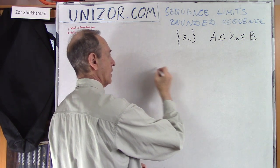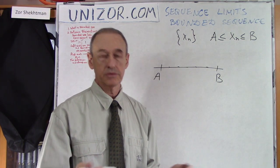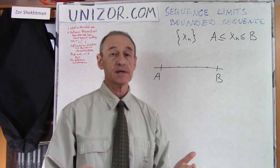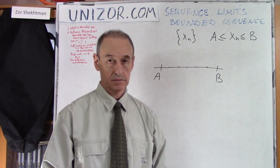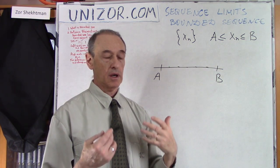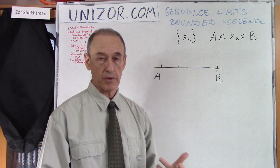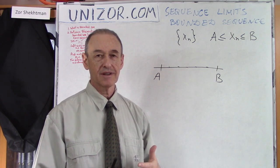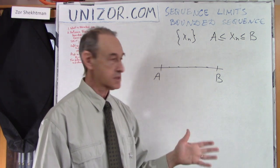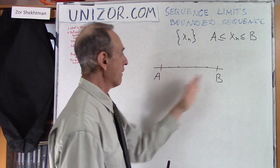Let's do it graphically. This is your A, this is your B, and somewhere in between there are points of our sequence xn. Now, xn is an infinite set. Even if you have repeating numbers in the sequence, like -1, 1, -1, 1, considering their quantity it's still infinite — it's still multiple points, namely an infinite number of points, and they are all between A and B.